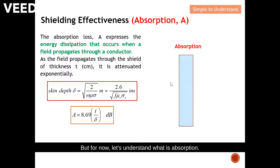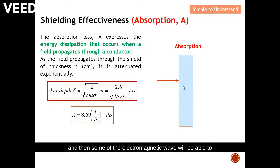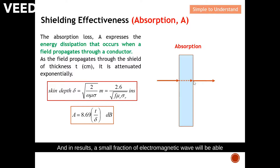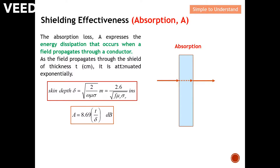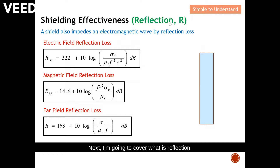For now, let's understand what absorption is. When an electromagnetic wave hits the shield, some of the electromagnetic wave will be able to penetrate through the shield — this is called absorption. As a result, only a small fraction of the electromagnetic wave successfully penetrates through the shield.